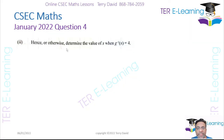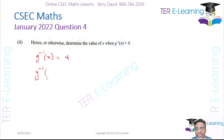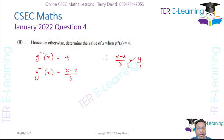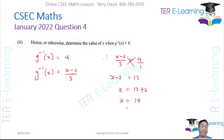The next part says hence or otherwise determine what value of x gives 4. Using the inverse function we just found, g⁻¹(x) = (x − 2)/3 = 4. Cross-multiplying: x − 2 = 12, so x = 14.